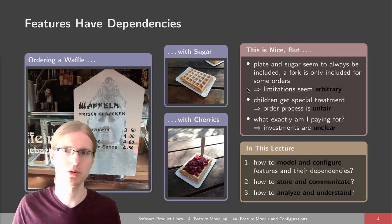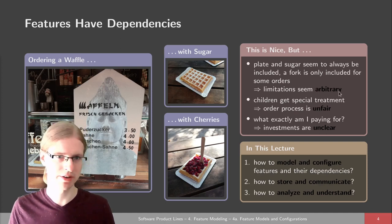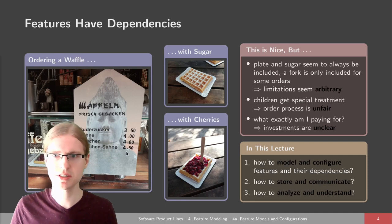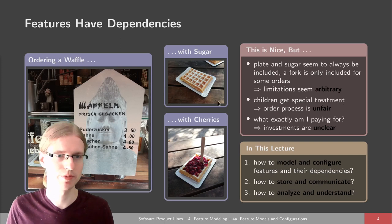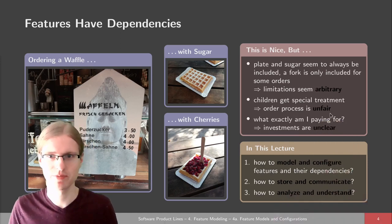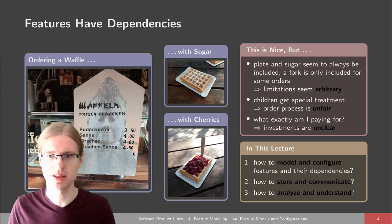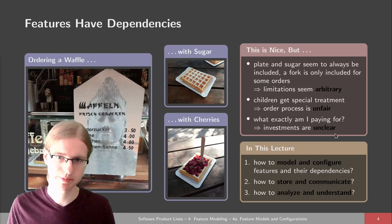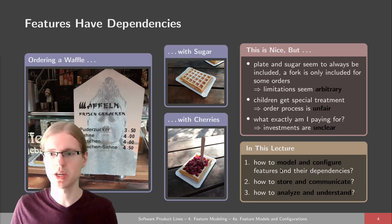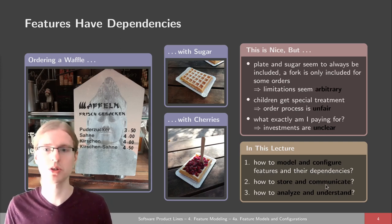However, there are some slight problems. In one configuration, you got a plate and a fork, but in another you didn't get a fork — probably because there are no cherries involved. These limitations seem arbitrary and are not documented in the list of configurations. Also, only children can get the colored crumbs, and if I want crumbs I can't get them. The ordering process is unfair and not well documented. It's also unclear what exactly you're paying for — how the individual prices combine to get the final price.